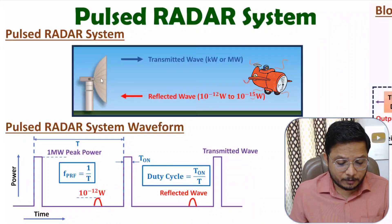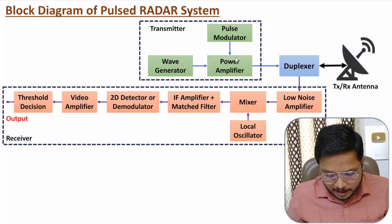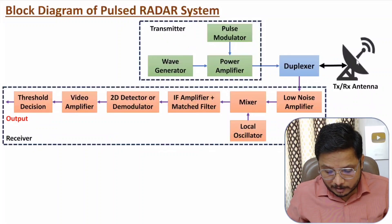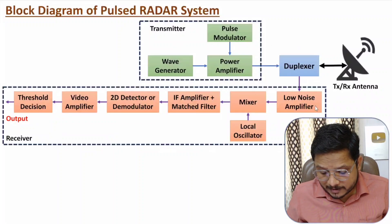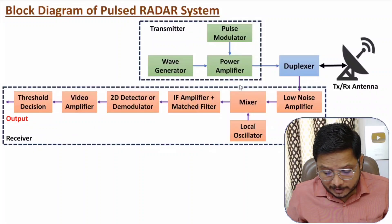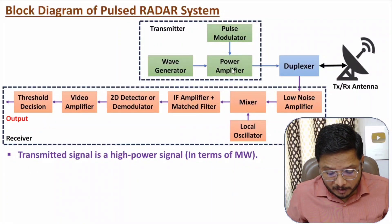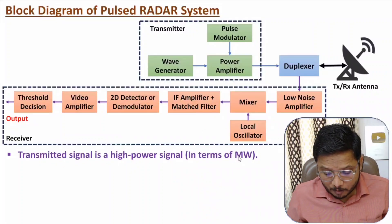Now let me explain how the block diagram is structured. You can see the block diagram of the pulsed radar system, which has three major elements: transmitter, receiver, and antenna. The transmitter transmits a high-power pulse while the receiver receives a very weak pulse. The transmitter and receiver are separated by a duplexer since we use only one antenna. Let me explain the transmitter section first — with the use of a power amplifier we transmit a high-power signal in terms of megawatts.